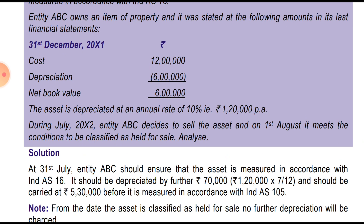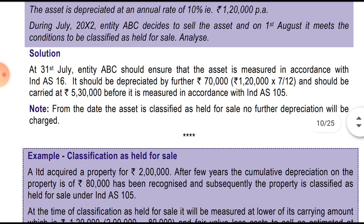During July 2002, that is the next year, entity ABC Limited decided to sell the asset. It meets the condition to be classified as held for sale on 1st August. So till 31st July we had to depreciate the asset and bring down the value after deducting the depreciation, and on 1st August it meets the classification as held for sale.